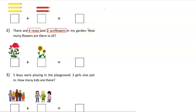Two sunflowers in my garden. How many flowers are there in all? We have one, two, three, and four roses, and one and two sunflowers. So let's find the total number of these flowers.